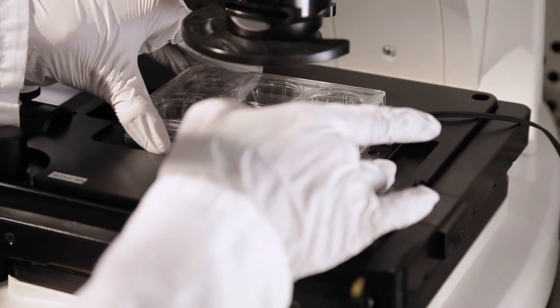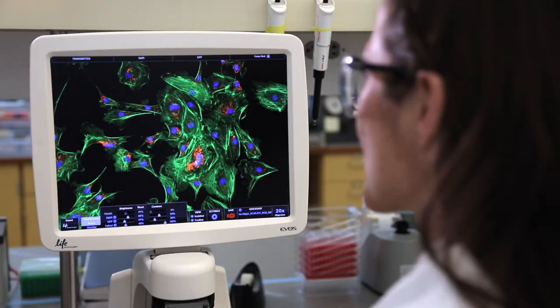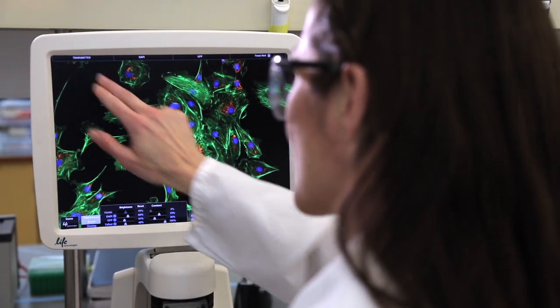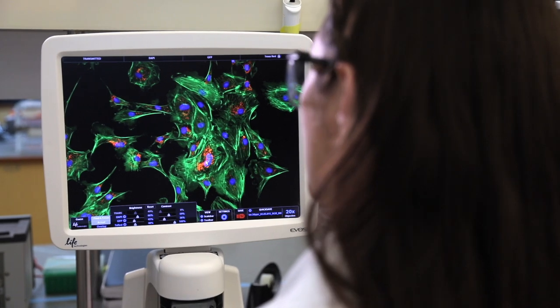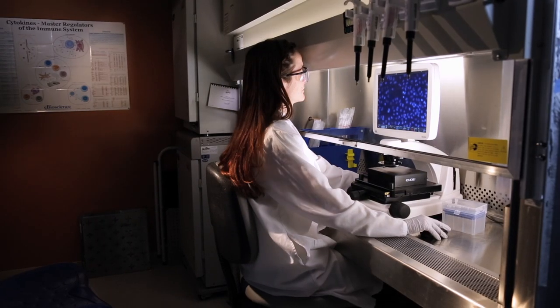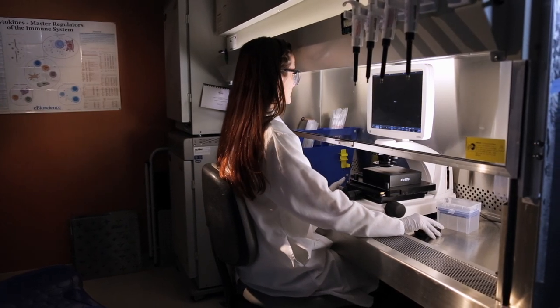The EVOS FL imaging system is the perfect instrument for collecting and capturing fluorescence images. This powerful system with a small, compact design is ideal for imaging in the cell culture room, at the laboratory bench, or in a teaching lab.